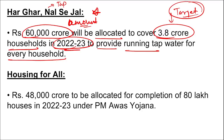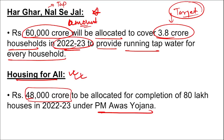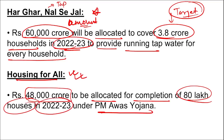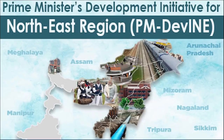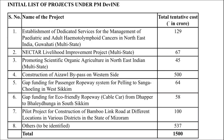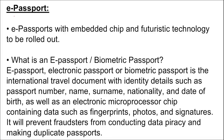Under Pradhan Mantri Awas Yojana (housing for all), Rs. 48,000 crore was allocated for completion of 80 lakh houses in 2022-23. The Prime Minister's Development Initiative for North Eastern Region (PM-DevINE) was also introduced, with a financial outlay of Rs. 1,500 crore to enable livelihood activities for youth and women. e-Passport with an embedded chip and futuristic technology will also be rolled out.